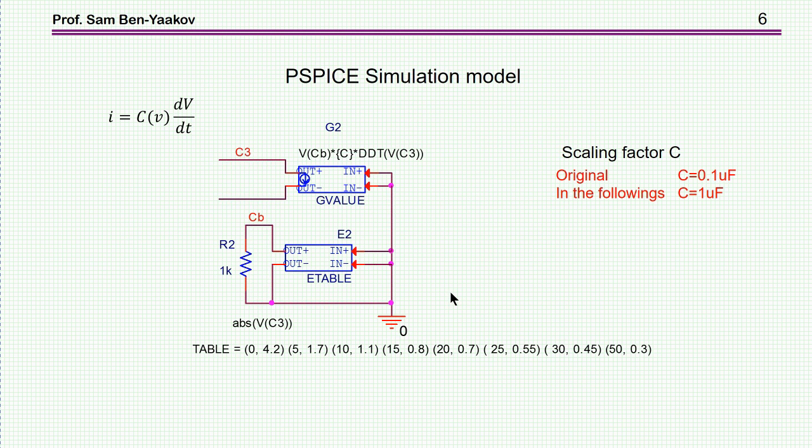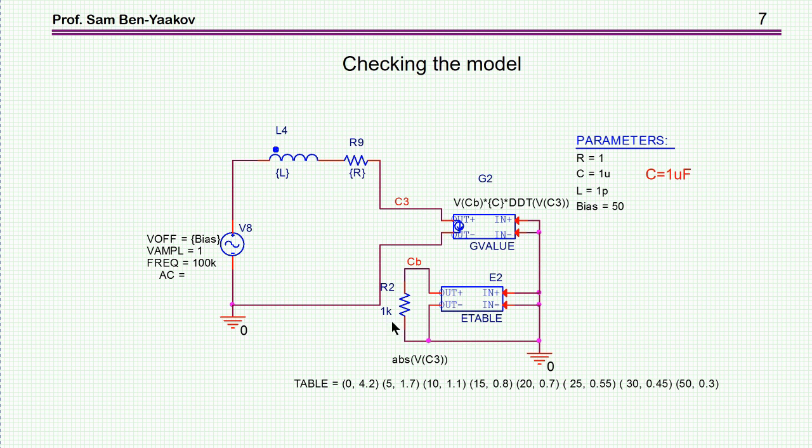To do this, I have to expose the capacitor, first of all, to a variable voltage, DC voltage. I'm doing it by having here a generator, which is a sinusoidal source with an offset, which is the bias. Bias is here, now defined as 50 volt. I'm going to sweep this voltage. I'm going to change it in steps. The amplitude of the generator is 1 volt and frequency is 100 kilohertz. This is just arbitrary.